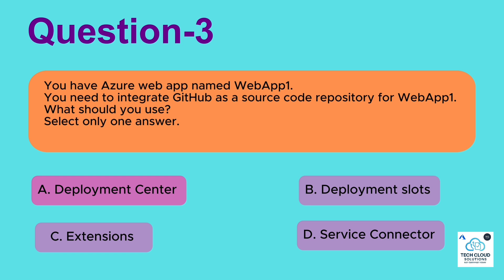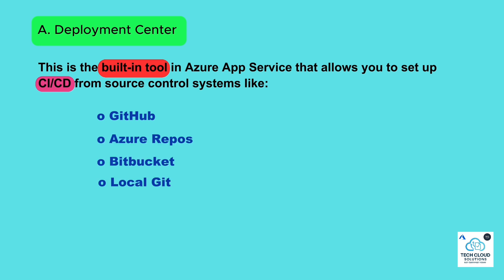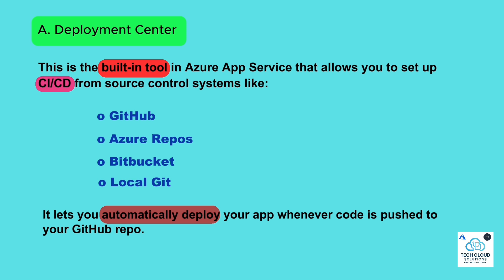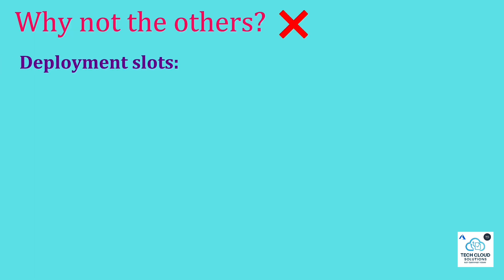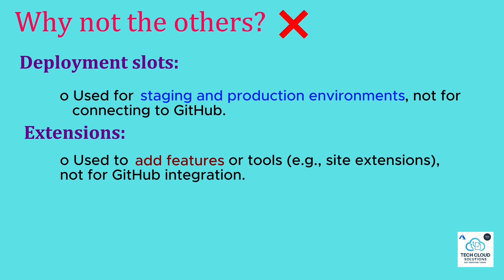Explanation: To integrate GitHub as a source code repository for your Azure Web App, you should use Deployment Center. This is the built-in tool in Azure App Service that allows you to set up CI/CD from source control systems like GitHub, Azure Repos, Bitbucket, and Local Git. It lets you automatically deploy your app whenever code is pushed to your GitHub repo. Why not the others? Deployment Slots — used for staging and production environments, not for connecting to GitHub.